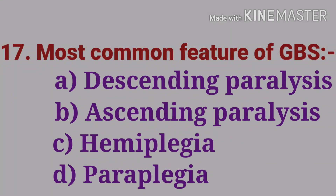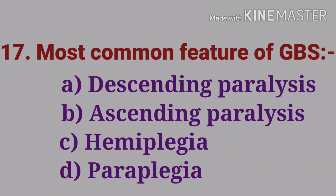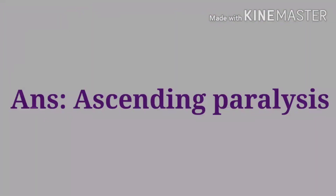The seventeenth question: most common feature of Guillain-Barré syndrome — options are descending paralysis, ascending paralysis, hemiplegia, and paraplegia. The answer is ascending paralysis. Paralysis starts from the legs. Descending type of paralysis is seen in Myasthenia gravis; ascending type paralysis is seen in Guillain-Barré syndrome.